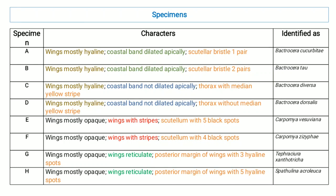Specimen G had wings mostly opaque, wings that were reticulate, and the posterior margin of wings consisting of 3 hyaline spots — identified as Tephrogura xanthotricha. Specimen H had wings mostly opaque, wings that were reticulate, and the posterior margin of wings consisting of 5 hyaline spots — identified as Pithulina acroleosa.